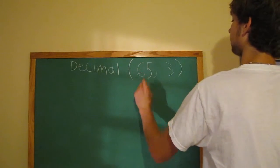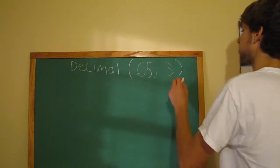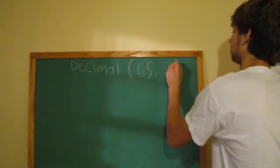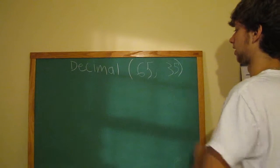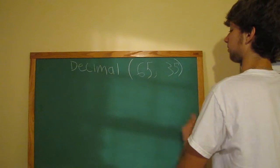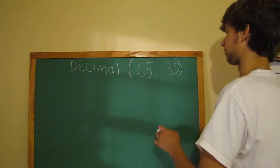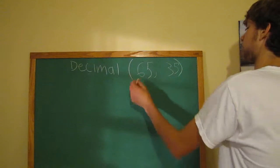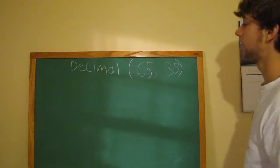So, this can go all the way up to 65, and then the scale can go all the way up to 35. This means it can have 35 decimals after, 35 digits after the decimal, which leaves 20 before the decimal.